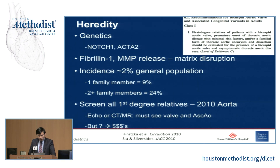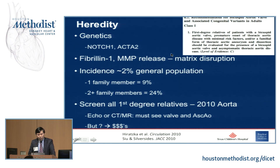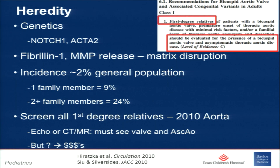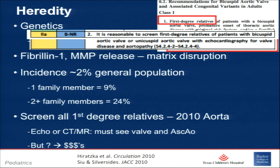Closing with heredity: the JACC state-of-the-art review by Siu and Silversides covers genetics — NOTCH1, ACTA2 mutations, fibrillin, and matrix proteins — where matrix disruption leads to incomplete delamination of the aortic valve. At 2% prevalence in the general population, a single affected family member confers almost a 10% chance for relatives, and two affected family members gives roughly a 1-in-4 chance for first-degree relatives. The 2018 ACHD guidelines give a 2A indication — downgraded from class I — for echo or CT/MRI screening of first-degree relatives.